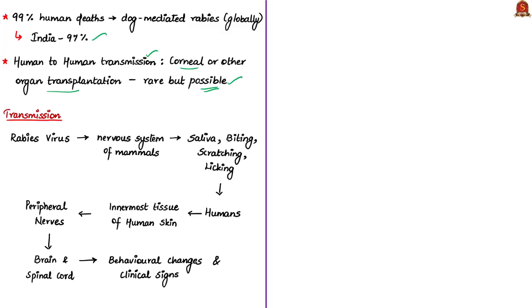The rabies virus invades the nervous system of mammals such as dogs and is primarily transmitted through the rabid animal's saliva when it bites or scratches someone. Animals licking wounds, broken skin, or the lining of the mouth and nose can also transmit the disease. After entering the human body, the virus progresses from the skin tissue into the peripheral nerves, then migrates along the nerves to the spinal cord and brain, causing behavioral changes and clinical signs.